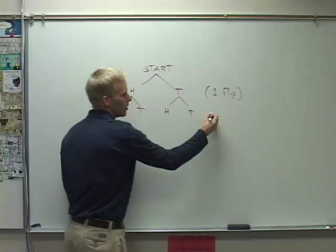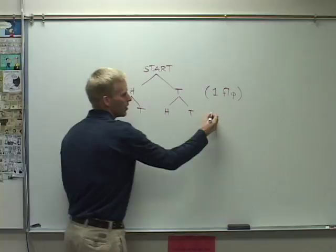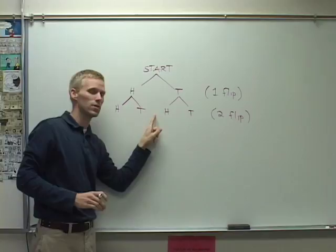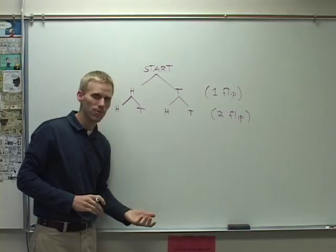And now we have our options for two flips: head followed by head, head first then tail second, tail first then head second, or two tails. We can keep this method going for as many flips as we need and then determine probability based on that.